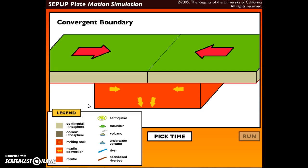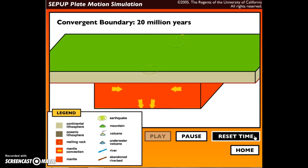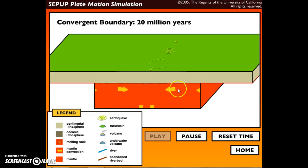We're going to pick a time - it's going to be 20 million years, the longest - and we're going to hit run. We're going to list the features and events that we see. We see the mantle is moving in a circular motion.